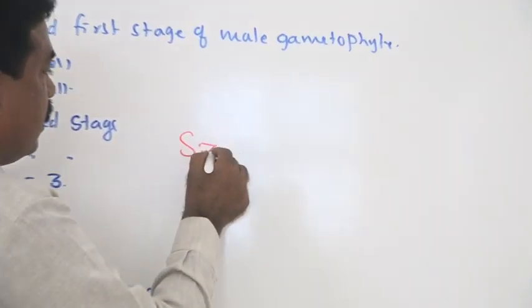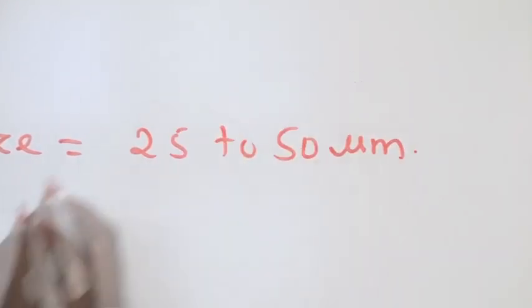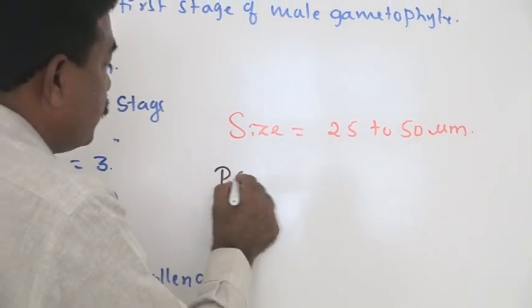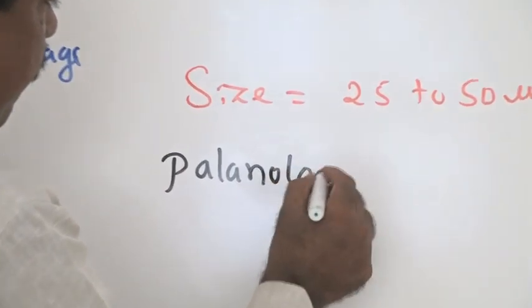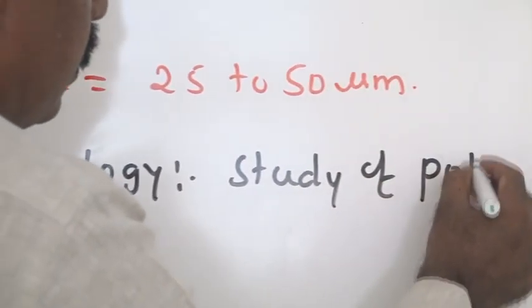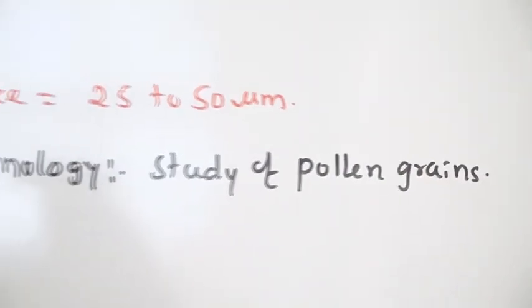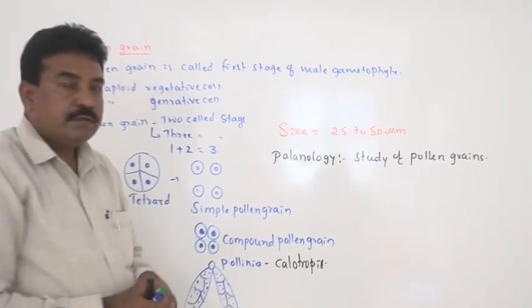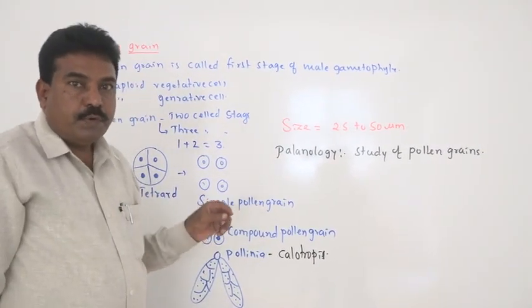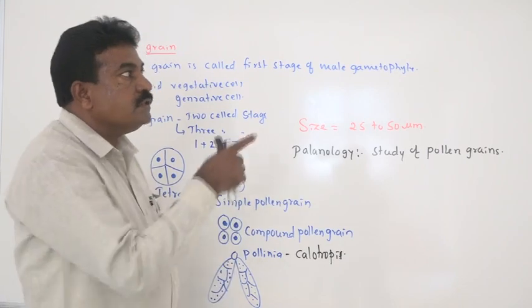If you consider the size of the pollen grain, it is 25 to 50 micron in diameter. The study of pollen grains we call palenology, where we can study the definition, size, structure, pollen allergy, and pollen grain viability.